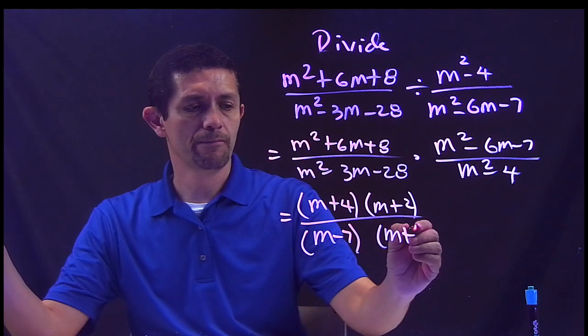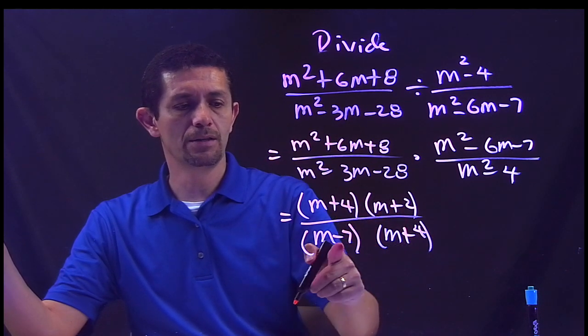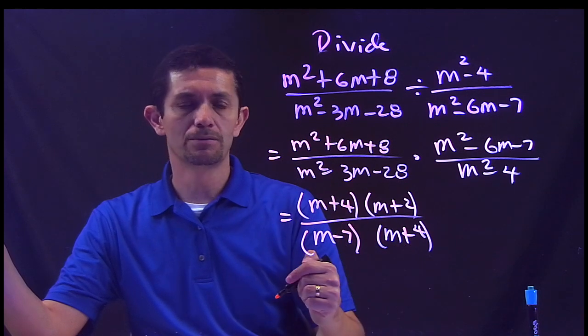Negative 7 times positive 4 is negative 28, negative 7 plus 4 is negative 3. We're good so far.